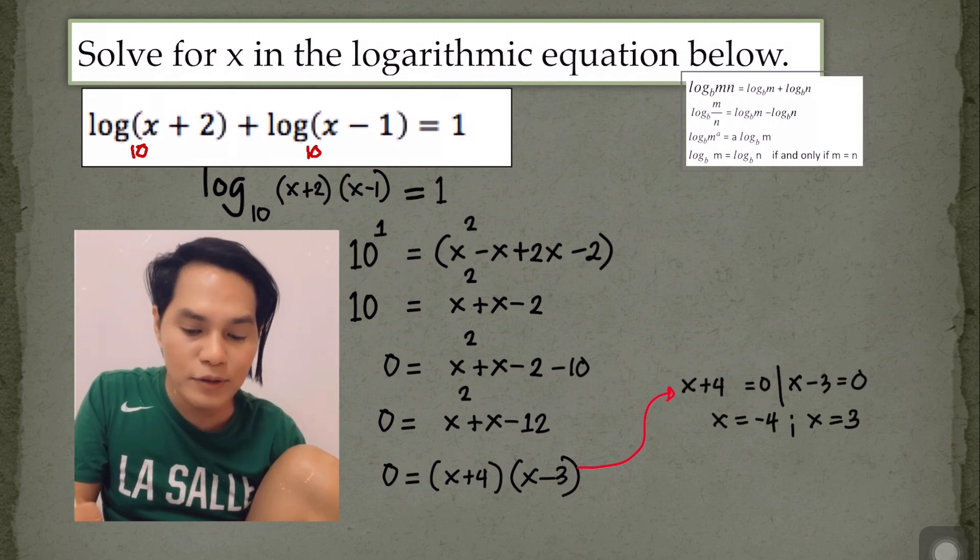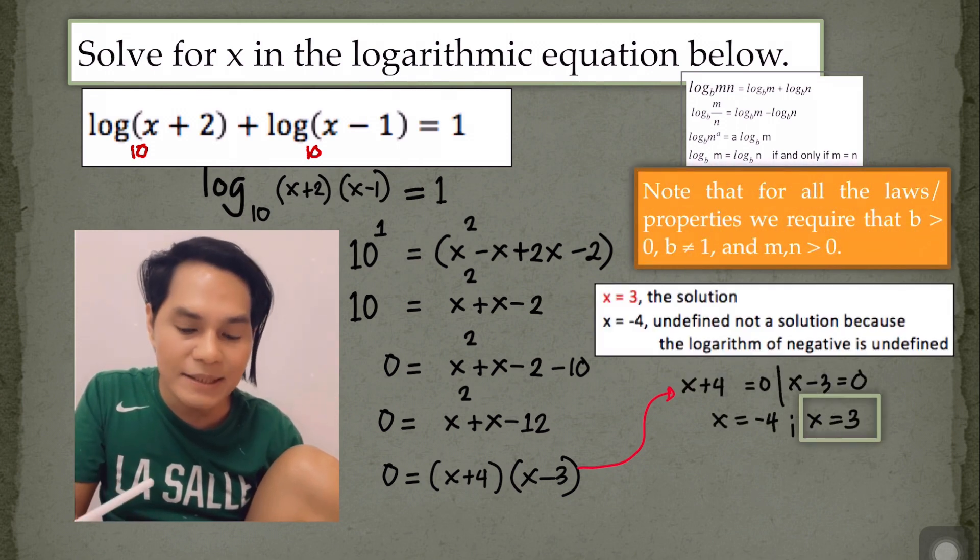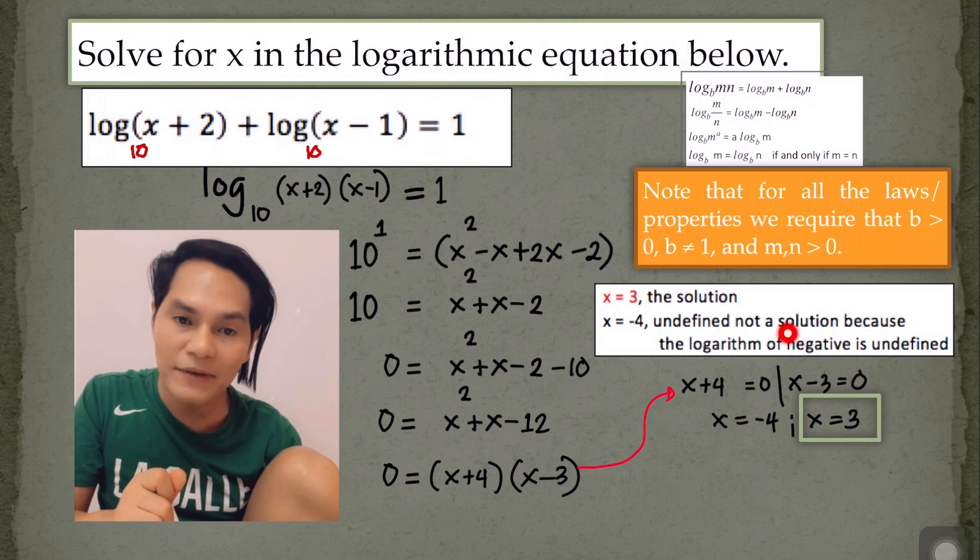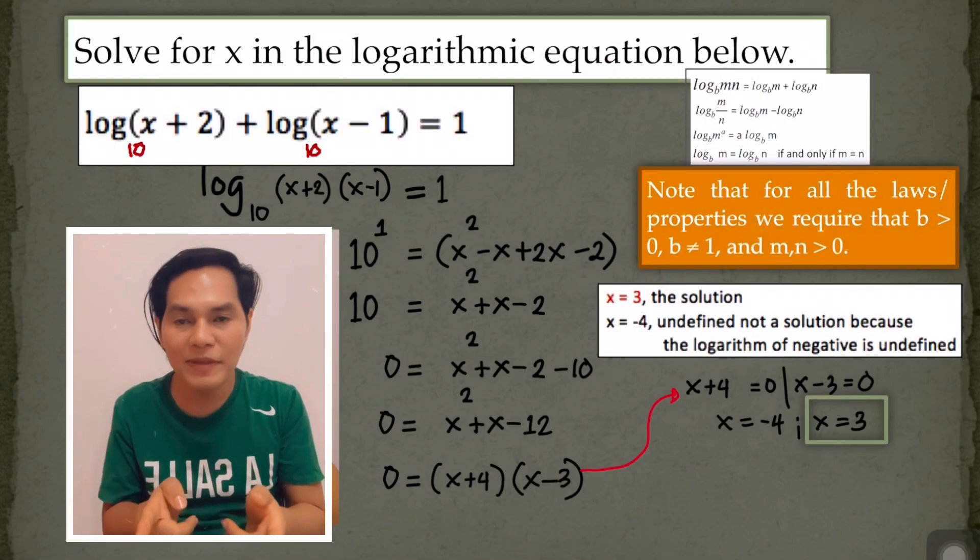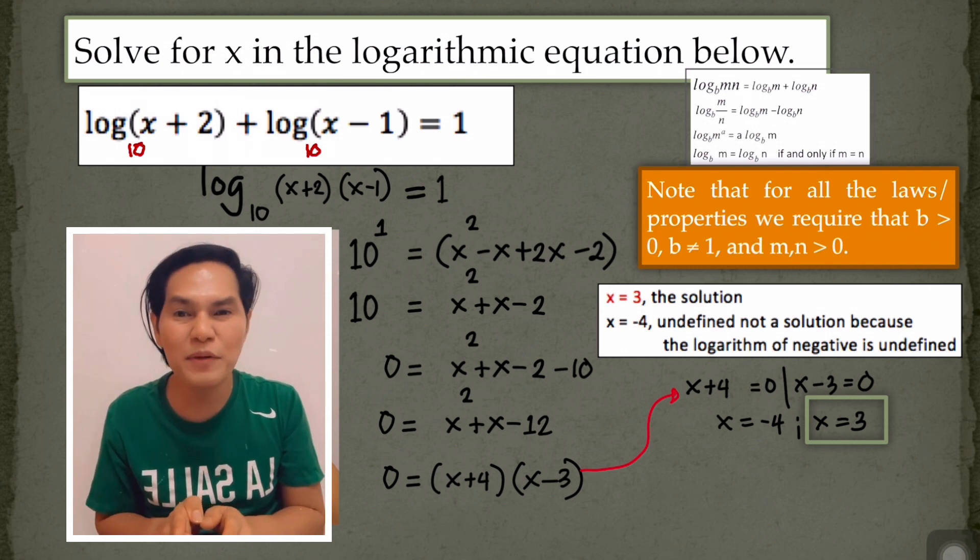But remember, the solution here is only 3 because negative 4 is considered undefined. And by the way, in the last problem that I have explained to you, there is another way of solving for x.